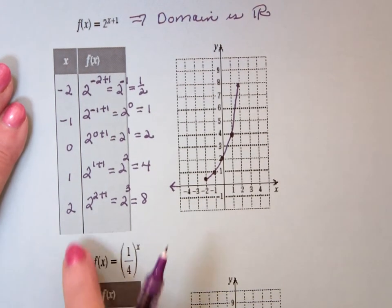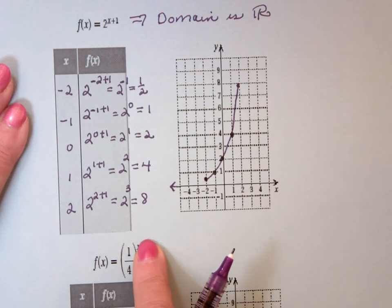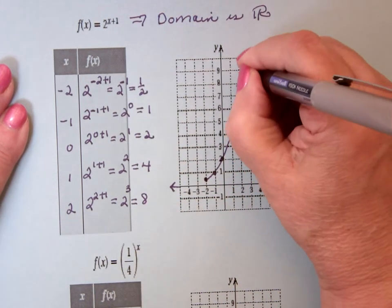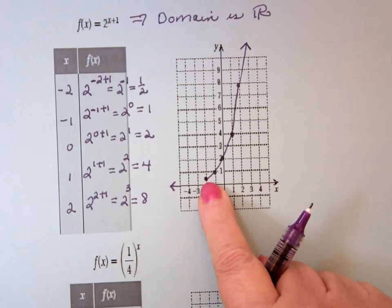Now, here's the thing. As x gets bigger, I notice y is getting bigger. So this is going to keep going this way. Now, the question is, what happens on this side?